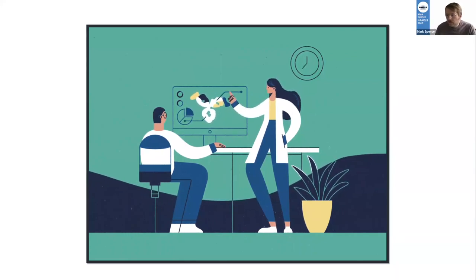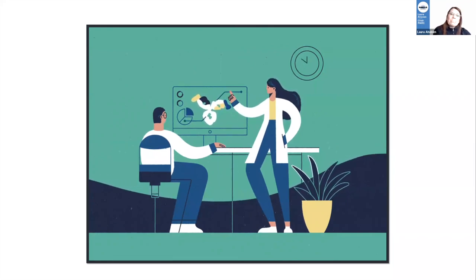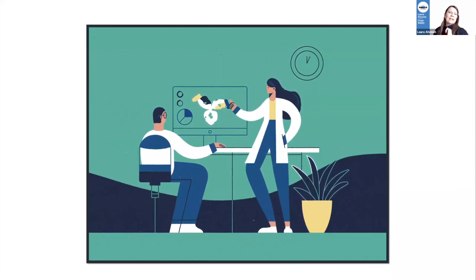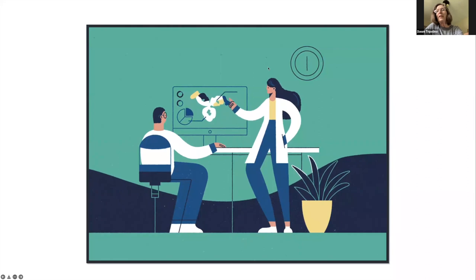Follow-up question: A program made a significant microbiology change and the first year they offered the new course was spring 2020, when students missed half their in-person lab. If there was no improvement, was it COVID or the new course not working as intended? It may just be too early to tell — you may just need more data. Keep monitoring, keep it on your spreadsheet a little bit longer, try different things, and keep your finger on that pulse.